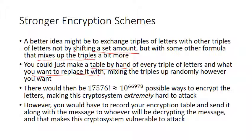That would be a really, really good way of doing it, because there would be 17,576 factorial different ways of arranging those triples of letters. 17,576 is not a very large number, but 17,576 factorial — the number of ways to arrange 17,576 different things in a list — is an extremely large number. It would take more than the time left in the universe to try to crack that.